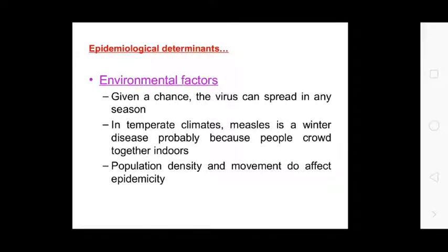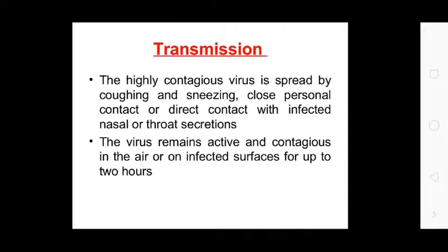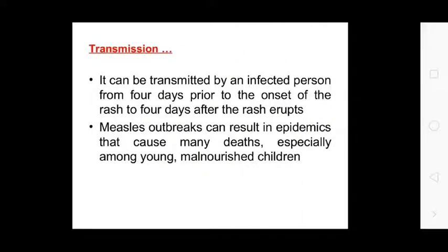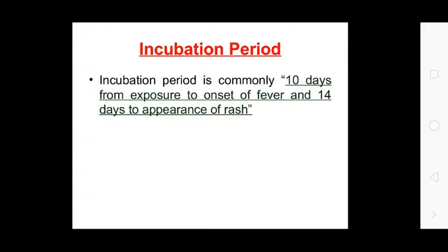Environmental factors: given the chance for the virus to spread, in temperate climates measles is a winter disease, probably because people crowd together indoors. Population density and movement affect the epidemicity of measles transmission. The virus is highly contagious and is spread by coughing, sneezing, close personal contact, and direct contact with infected nasal or throat secretions. The virus remains active and contagious in air or on infected surfaces for up to two hours. It can be transmitted from an infected person from four days before the onset of the rash to four days after the rash erupts. Measles outbreaks can result in epidemics causing many deaths, especially among young malnourished children. The incubation period is commonly 10 days from exposure to onset of fever and 14 days to appearance of rash.